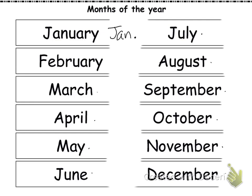There are three months that don't have abbreviations because they already have really short names. Those are May, June, and July. Those three months don't usually have an abbreviation.